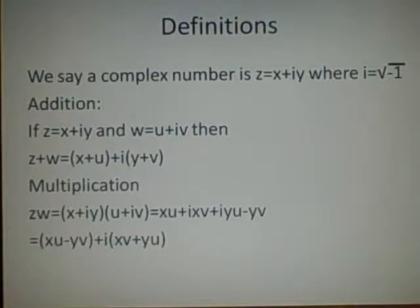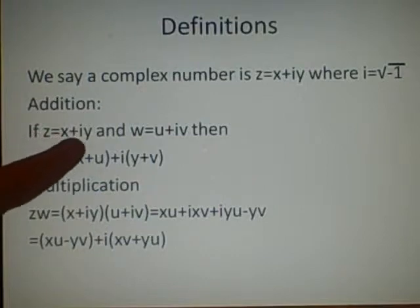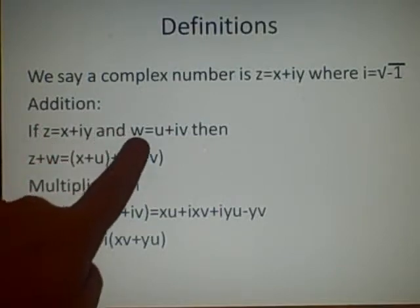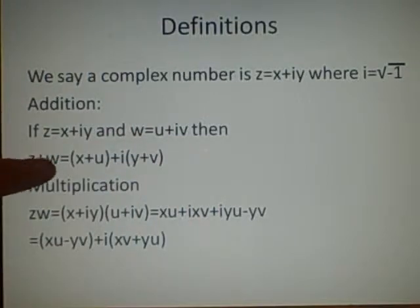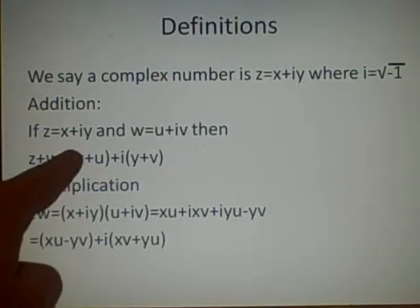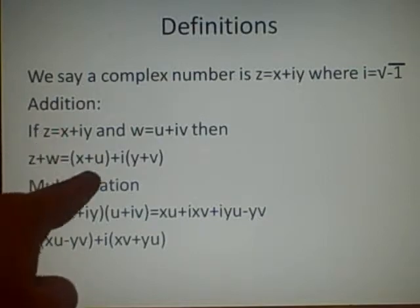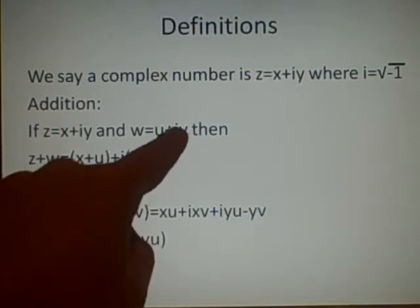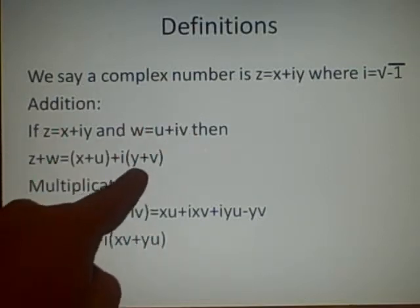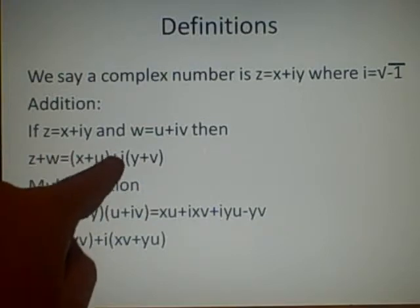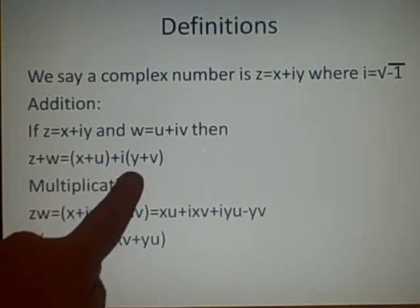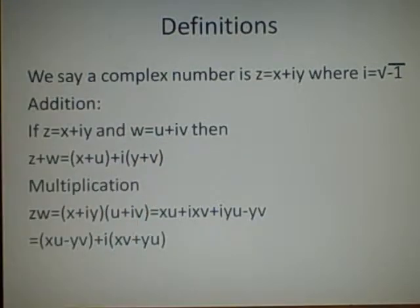In addition, if we have z as x plus iy and w as u plus iv, then z plus w is simply all the real parts added together and all the imaginary parts added together. So x plus u is the real part, plus i times y plus v.